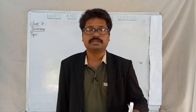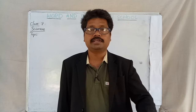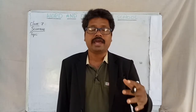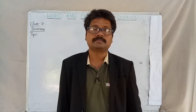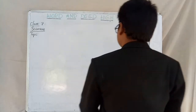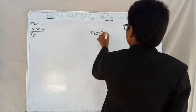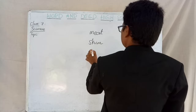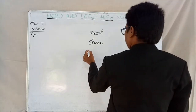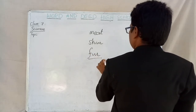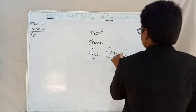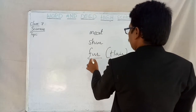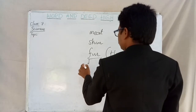Today, before revealing the name of the lesson, I would like to ask you a few questions. Do you know what are the animal products generally used by human beings? Meat and skin are used at an industrial level to make different articles. And fur — fur is nothing but the hair of an animal — is also used in different industries to make different articles.